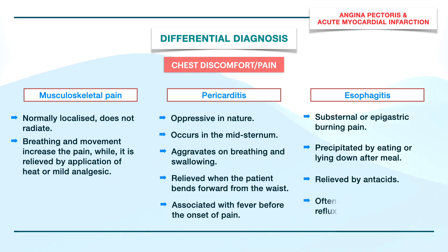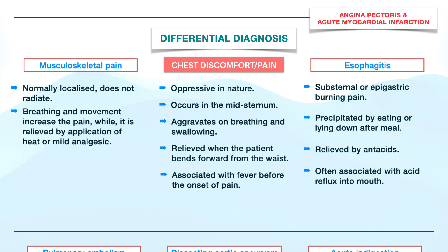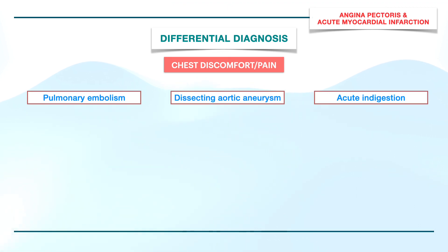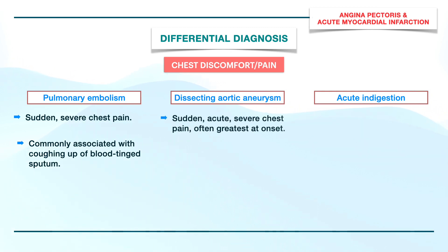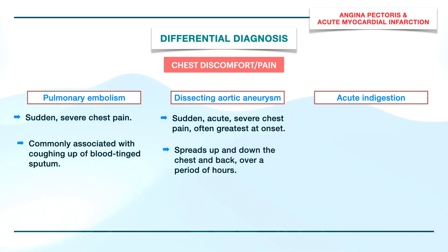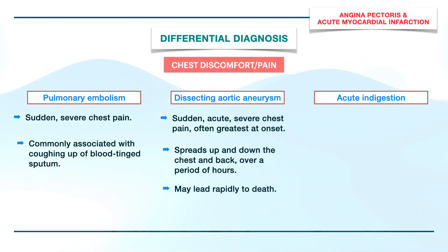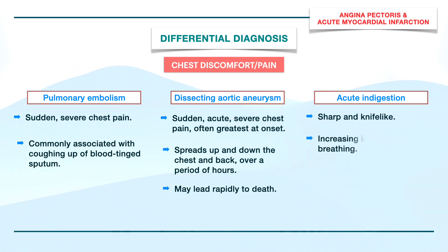Esophagitis is often associated with acid reflux into the mouth. Pulmonary embolism presents as sudden severe chest pain, commonly associated with coughing up blood-tinged sputum. In dissecting aortic aneurysm, there is sudden acute severe chest pain, often greatest at onset; it spreads up and down the chest and back over hours and may rapidly lead to death. Acute indigestion presents as sharp, knife-like pain that increases in intensity with breathing.